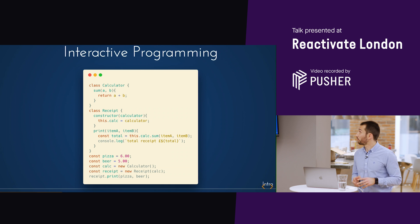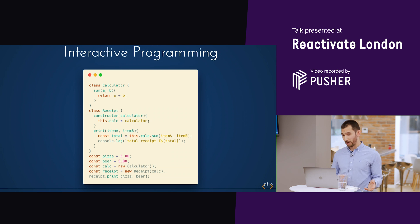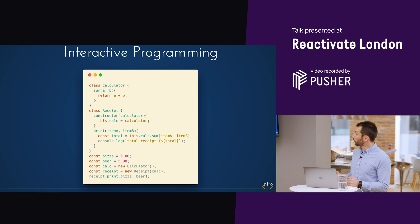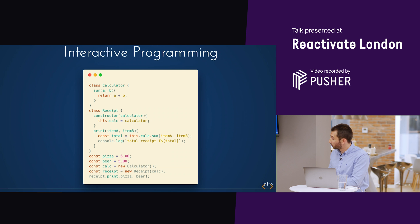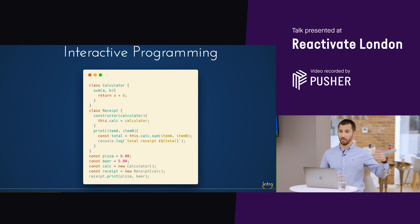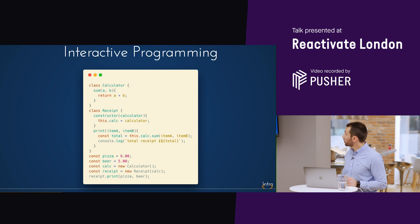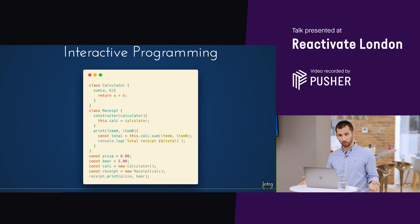This is an example of using functional programming in an interactive way, which I believe most of us are using. We have a separation of concern: the calculator is in charge of summing two elements A and B, and we have a receipt object that is the receiver of the calculator object. We pass it as a dependency injection, so in the constructor we get the calculator, initialize it, and in the print method of the receipt we call the method inside the calculator, getting the total from the sum method.